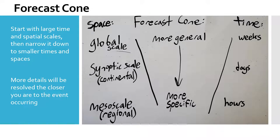For a quick refresher, let's start with the forecast cone. Remember the forecast cone gets its shape as it goes from more general to more specific in space and time. We start with large time and spatial scales and then narrow it down to smaller times and spatial scales as more details become apparent.